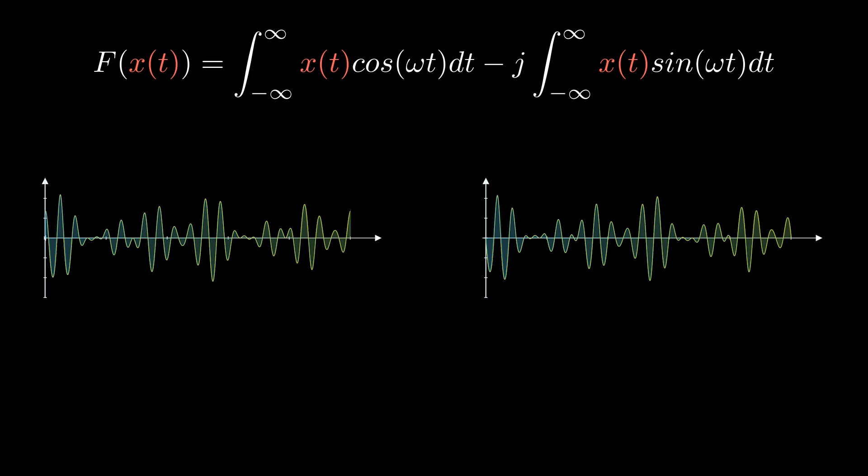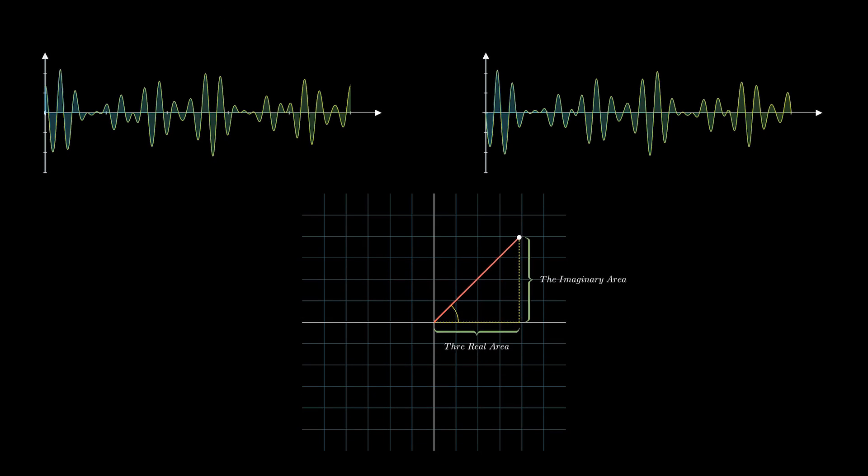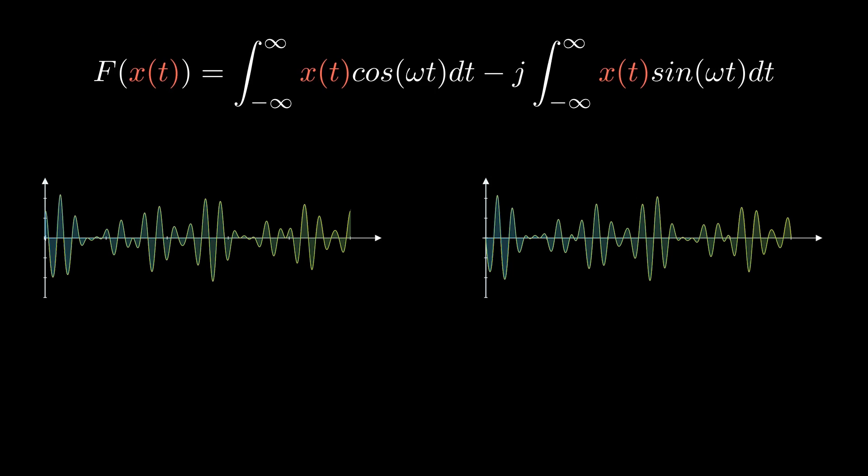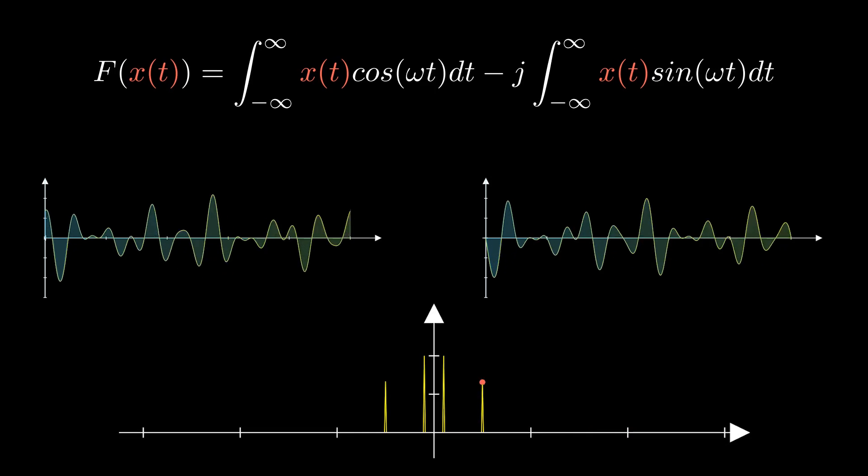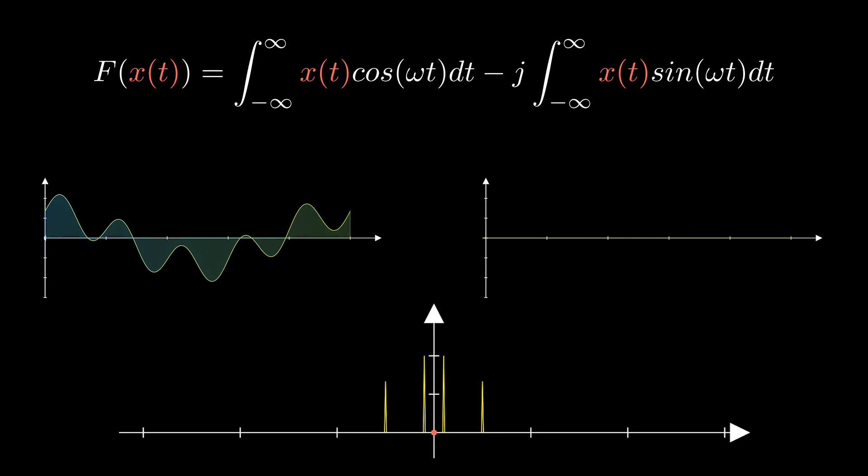These areas represent the real and imaginary components of some complex number. The magnitude of that number is the magnitude of the Fourier transform of the function at that specific frequency, and the angle is the phase. As we sweep the frequency and keep tracking that magnitude and phase, we get the entire Fourier transform.